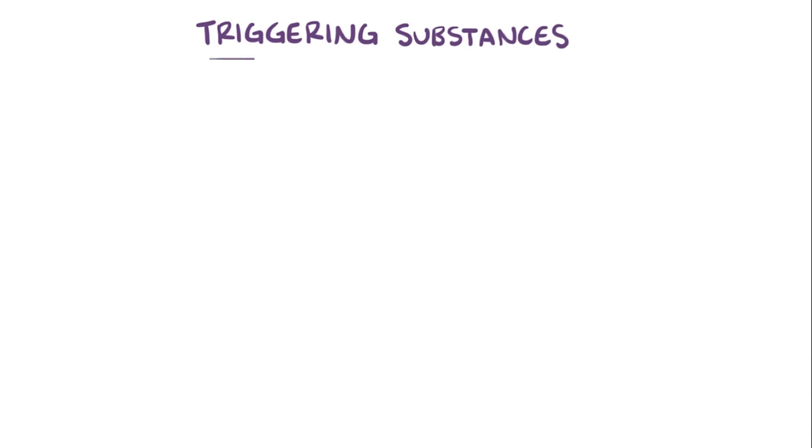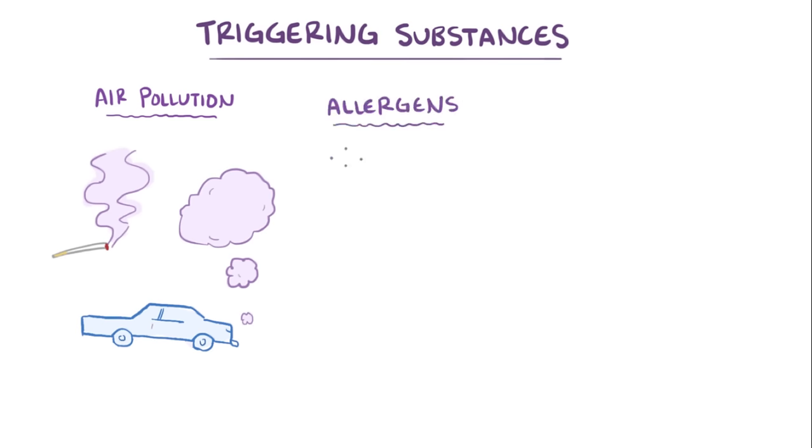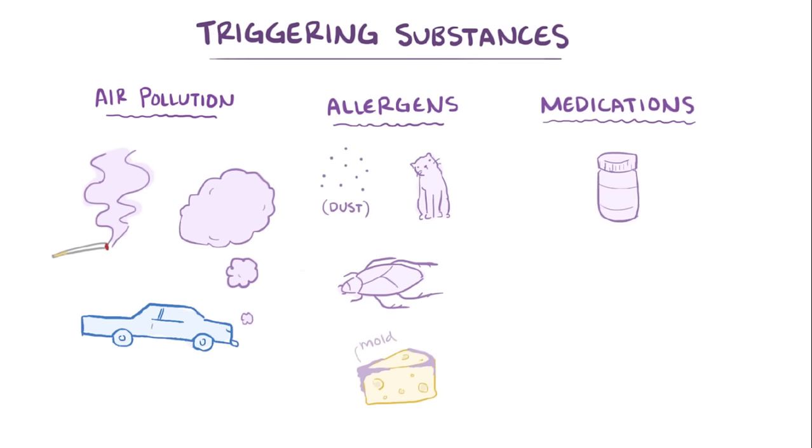The triggering substance that leads to an asthma attack can differ from person to person, but some common ones include air pollution like cigarette smoke and car exhaust, as well as allergens like dust, pet dander, cockroaches, and mold. Medications like aspirin and beta blockers have also been known to trigger symptoms in some individuals with asthma.